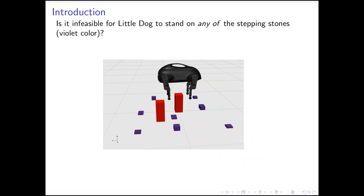Here is another example. We ask is it infeasible for the little dog to stand on these stepping stones. Most IK solvers cannot answer this question, because first, they do not certify global infeasibility, and second, the solver needs to assign each leg to one of the stepping stones. There are exponential number of stepping stone assignments, and it takes too long for the solver to enumerate all combinations.